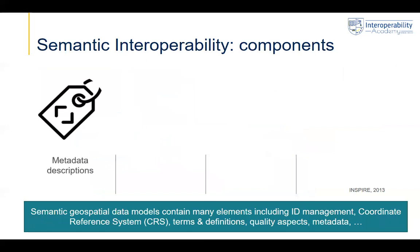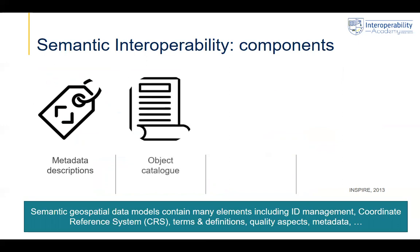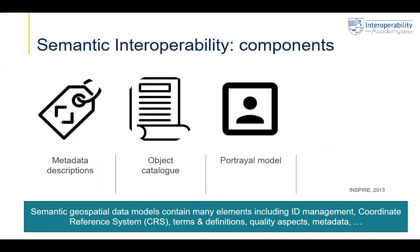Looking at semantic interoperability in particular, there are different components: documentation about the data, components, and services. There may also be detailed object catalogs, especially in the context of location data, because we model the real world — you need descriptions of what objects mean, how they are portrayed and visualized, and quality issues. Very important are also unique identifiers and unique identifier management. Specific to location data are coordinate reference systems, and of course terms and definitions.